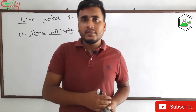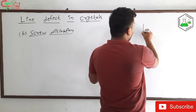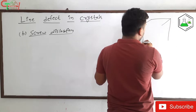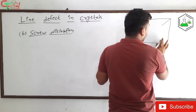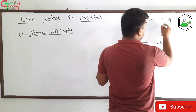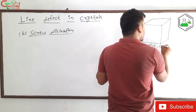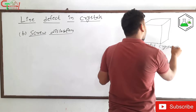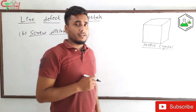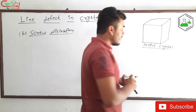Let's understand this with a figure. This is the perfect crystal — the structure a crystal should ideally have. However, due to thermal effects and stress, the crystal is not in this perfect arrangement, and a defect is produced in the crystal.